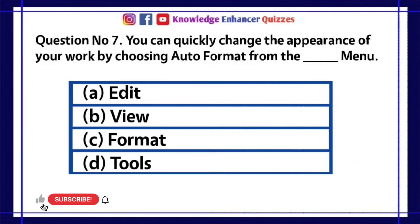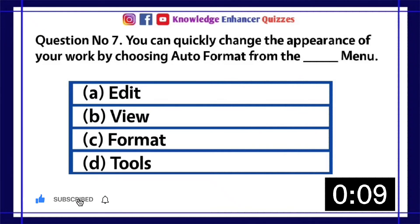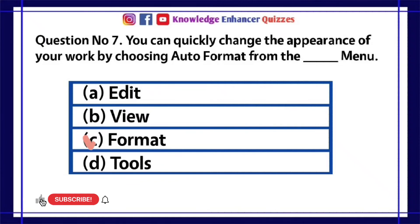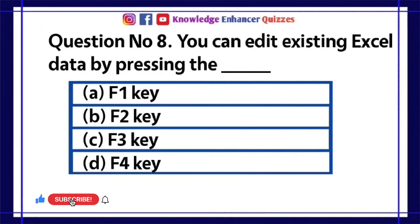Question number 7: You can quickly change the appearance of your work by choosing Auto Format from the dash menu. A. Edit  B. View  C. Format  D. Tools. Option C is the right answer.